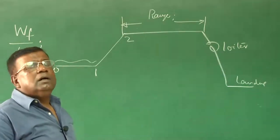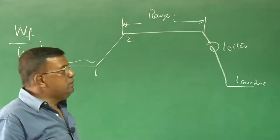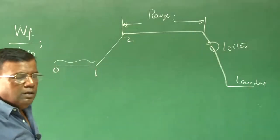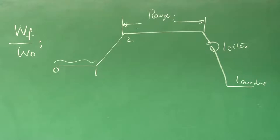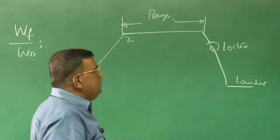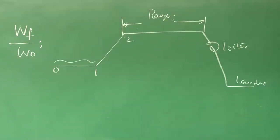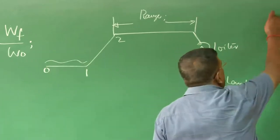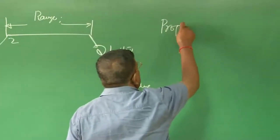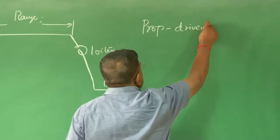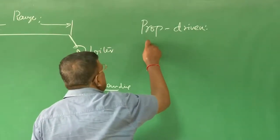Mission as a range means how many kilometers; mission as a loiter means how many seconds or hours going to be in air. So we will revisit range and endurance for two types of aircraft: one is propeller driven, let us say IC engine based, and the other is jet driven.